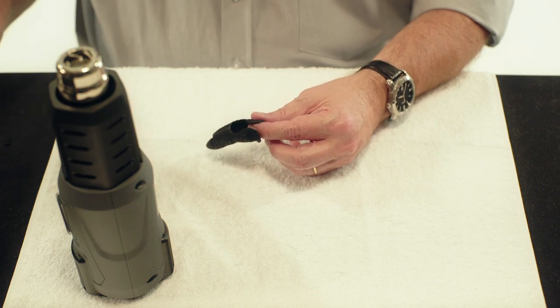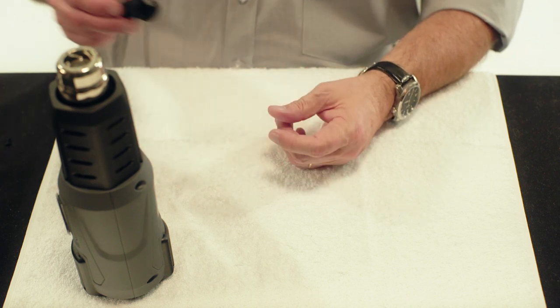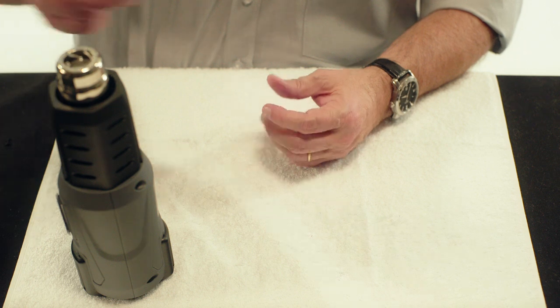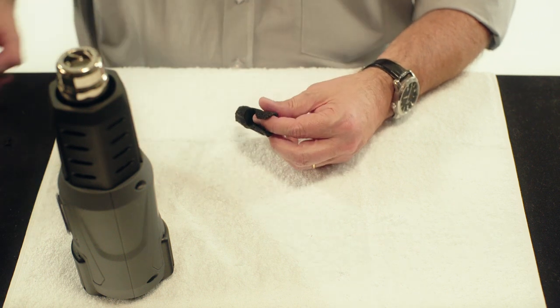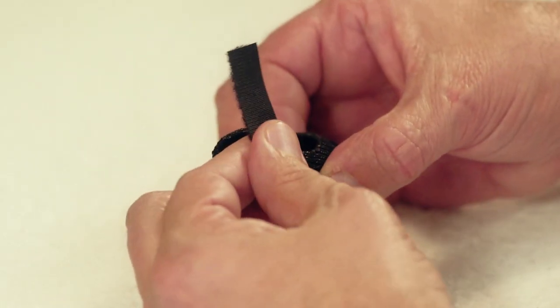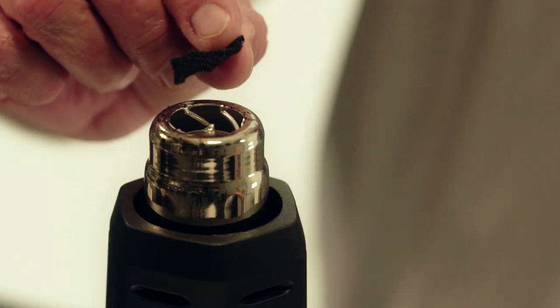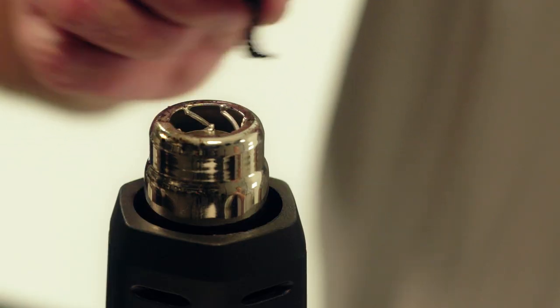To attach the velcro loop directly to the orthosis, heat the orthicast material and adhere the velcro loop. Secure the velcro loop by heating a small piece of orthicast with the heat gun and stick it on the edge of the velcro loop.